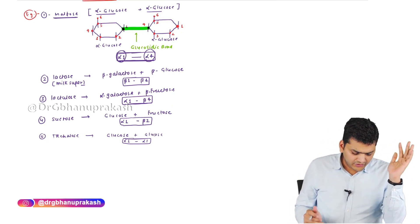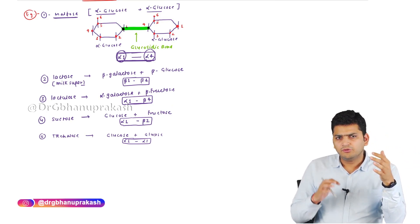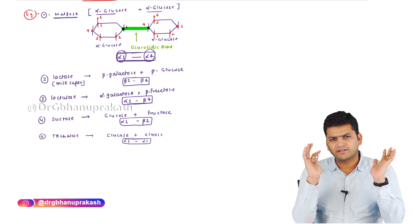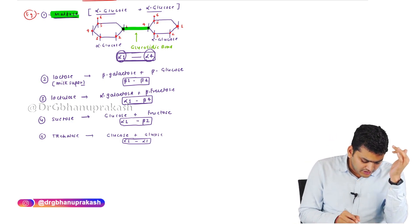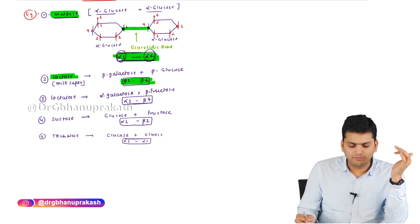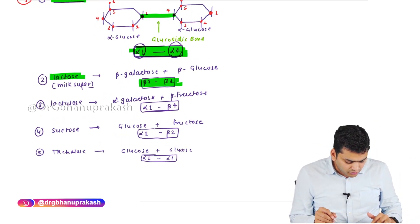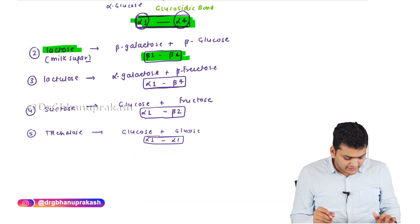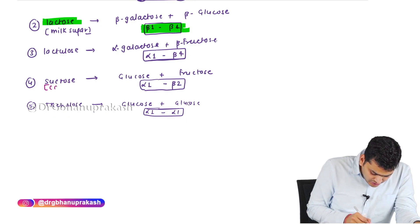The most important bond directions to remember are: maltose is alpha-1,4 and lactose is beta-1,4. For the others, knowing the composition is sufficient. Sucrose is also called cane sugar.